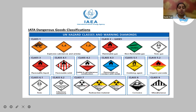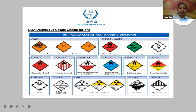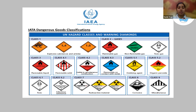Class three includes flammable liquids, marked fully in red to indicate fire hazard. Class four covers solids: class 4.1 is flammable solid, identified by white and red stripes. Class 4.2 is liable to spontaneous combustion. Class 4.3 covers substances that can catch fire when in contact with water.